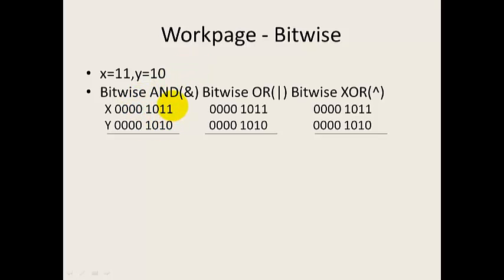For bitwise operators, we perform bit-level AND and OR operations on bits. The same bitwise operation is common — we record one of two bits for a result.